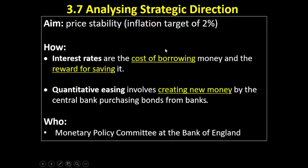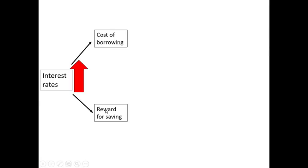Let's say inflation is running at five percent — above the two percent target. The Monetary Policy Committee wants to bring inflation down. What are they going to do with interest rates? They're going to put interest rates up. When explaining the impact of changing interest rates on business, the line of analysis is to go down both routes: the cost of borrowing and the reward for saving.